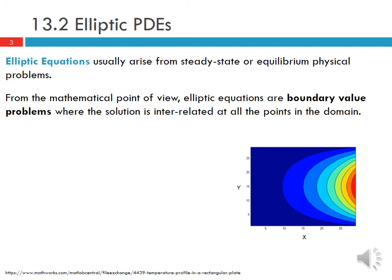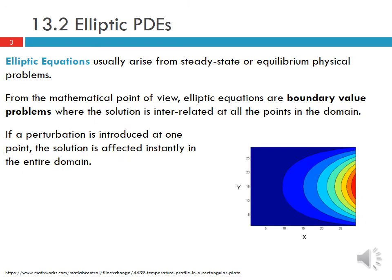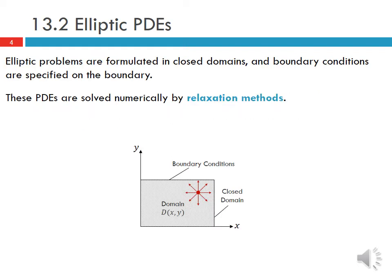Elliptic equations usually arise from steady state or equilibrium physical problems. From the mathematical point of view, elliptic equations are boundary value problems where the solution is interrelated at all points on the domain. If a perturbation is introduced at one point, the solution is affected instantly in the entire domain. Elliptic problems are formulated in closed domains, and boundary conditions are specified on the boundary.